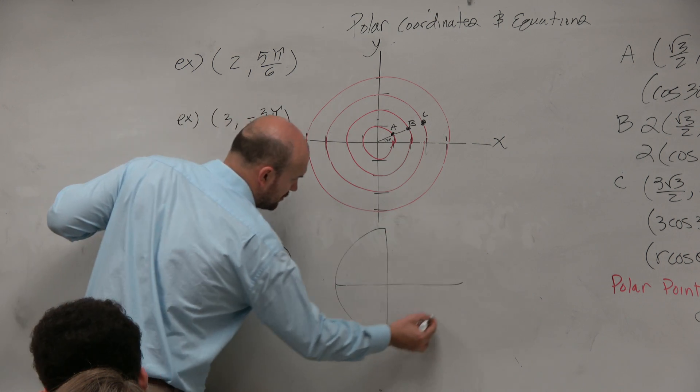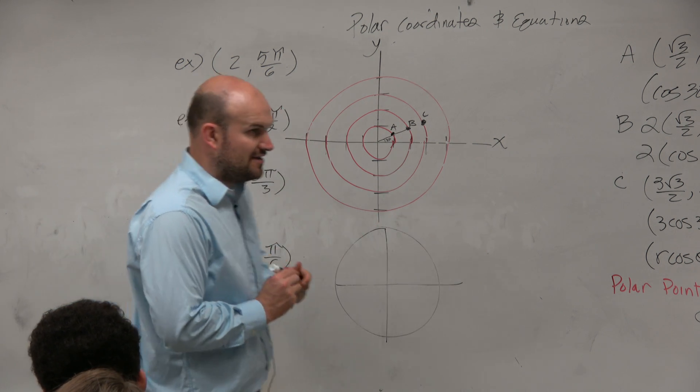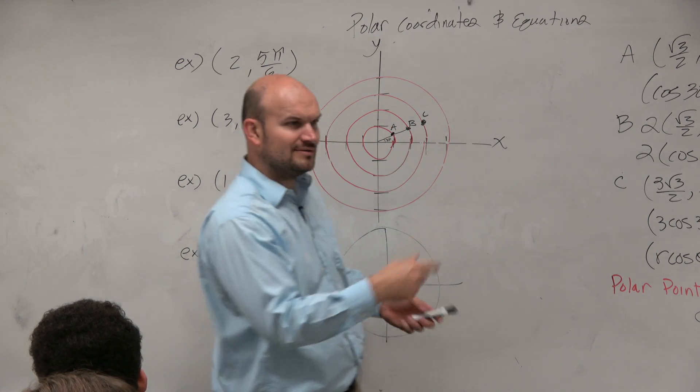So if I go back to my unit circle days, and I say if I want to graph 5 pi over 6, ooh, that was kind of close.